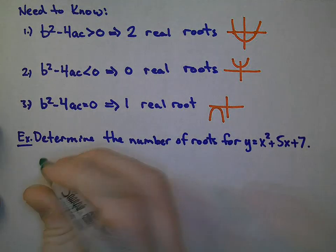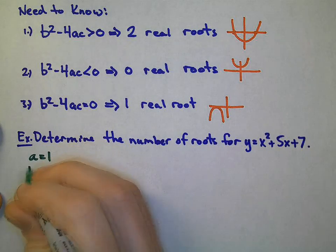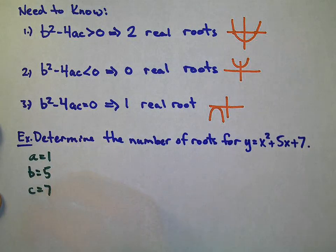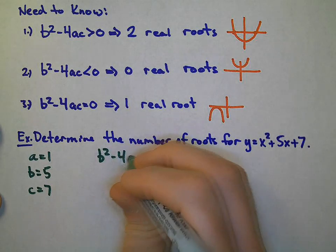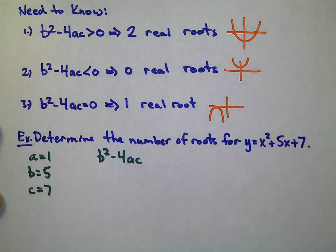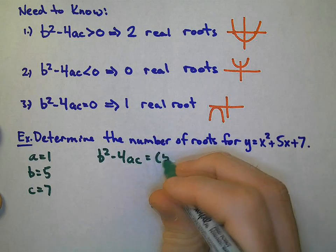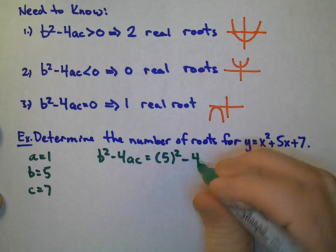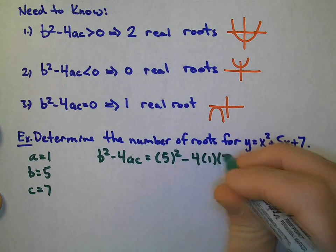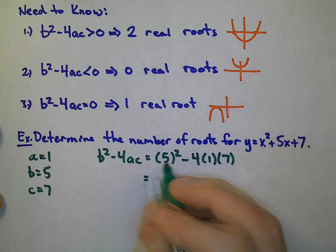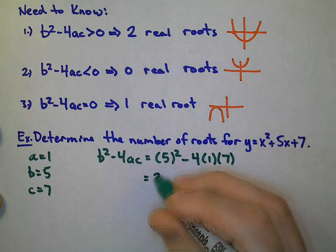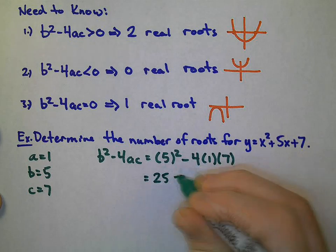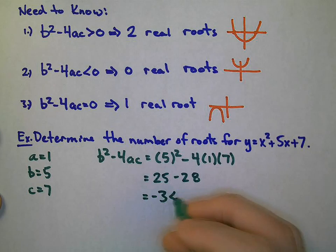And from here we can see easily a is equal to 1, b is 5, and c is 7. So looking at b squared minus 4ac, we get 5 squared minus 4 times 1 times 7. And 5 squared is 25. 4 times 1 times 7 minus 28. And that's equal to negative 3, which is less than 0.